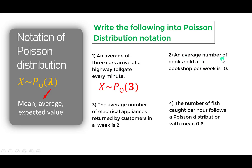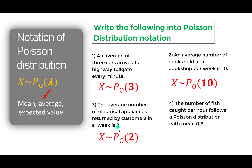Example 2: the average number of books sold at a bookshop per week is 10, so X ~ Poisson(λ = 10) for one week. If asked for two weeks, multiply 10 by 2, giving lambda = 20. Example 3: the average number of electrical appliances returned by customers in a week is 2, so X ~ Poisson(λ = 2). Example 4: the number of fish caught per hour follows a Poisson distribution with mean 0.6, so X ~ Poisson(λ = 0.6). Note that Poisson does not have an N parameter.